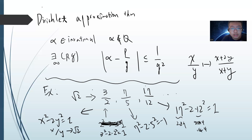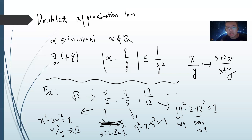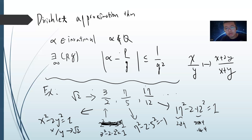But there's another theorem which is like a converse. These Dirichlet results give you an upper bound on the approximation, but there should also be a lower bound, right? Because alpha is irrational, there should always be a bound at some particular region.